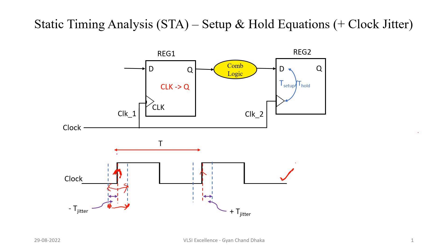If you see here, this is our ideal clock signal and this is our ideal rising clock edge. If this rising edge happens on the left side, we call it negative clock jitter, and if it happens on the right side, we call it positive clock jitter. If the rising edge of the clock happens after the ideal clock rising edge due to the clock jitter effect, this is called positive clock jitter.